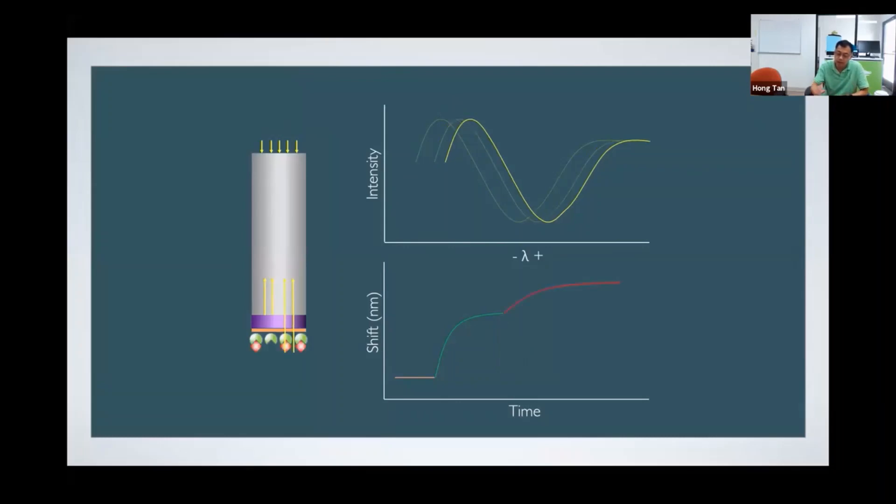If we dip the probe into a second molecule, and the second molecule binds to the first molecule, you can see another binding curve. If we strip off the second molecule from the surface, meaning dissociate the second molecule from the first molecule, we can measure the dissociation curve. With this technology, we can measure kinetics in real time. Very simple, very easy, very straightforward.